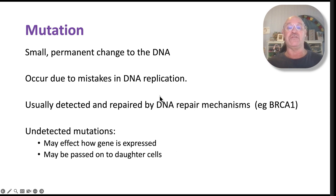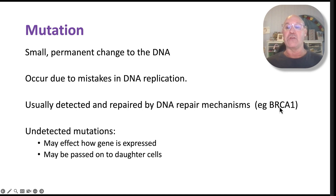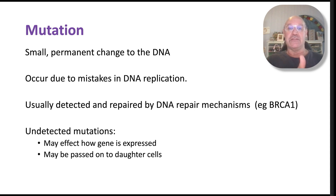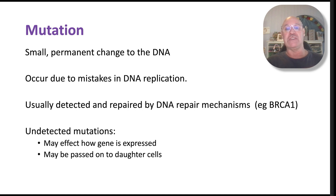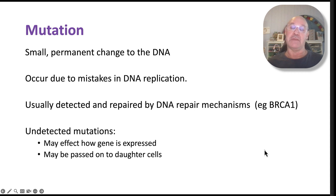Mutations of genes generally occur through DNA replication. There are processes that check and repair mutations. A classic example is BRCA1 and BRCA2 — genes that produce products which check that the DNA is being replicated correctly. Mutations in BRCA1 and BRCA2 can potentially result in an inability to detect and repair mutations in DNA, and that can lead to cancer, particularly breast cancer.